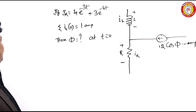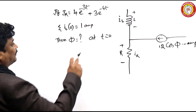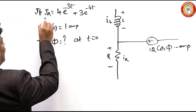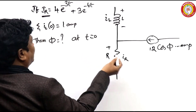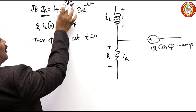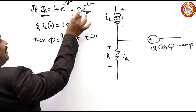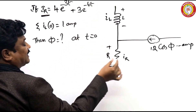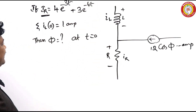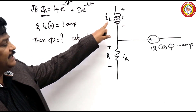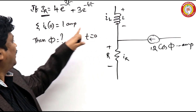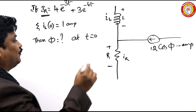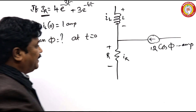See one more example for the problem given, based on KCL only. I R is 4e^(-3t) plus 3e^(-40t). Next, I L of 0 is given as 1 ampere, so we know this current is 1 ampere.